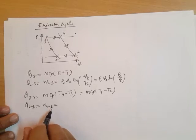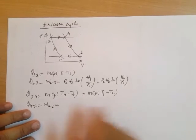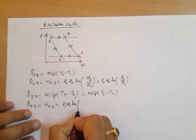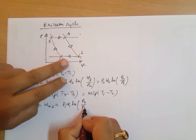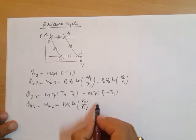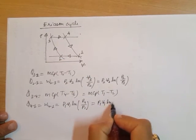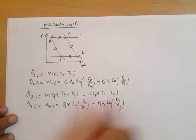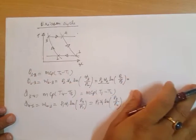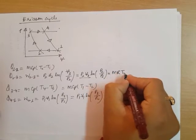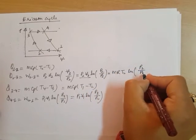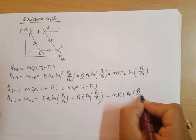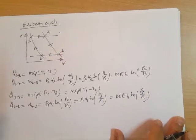For Q41, the isothermal work leads to P1·V1·log(P3/P1), since P4 equals P3 and P1 equals P2. For an ideal gas, P2·V2 equals mRT2, so Q23 becomes mRT2·log(P2/P3), and Q41 becomes mRT1·log(P3/P2).